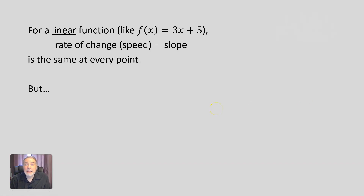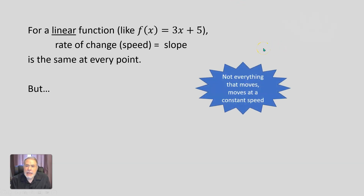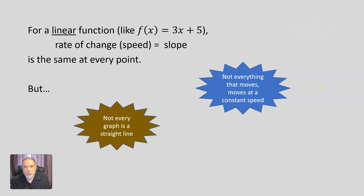That's because this is a linear function. The function y, or f of x equal to 3x plus 5, is a linear function. So the rate of change, or the speed, is the slope of that line, and it's the same at every point. But not everything that moves, moves at a constant speed. Some things move faster and then slower — they change speed.